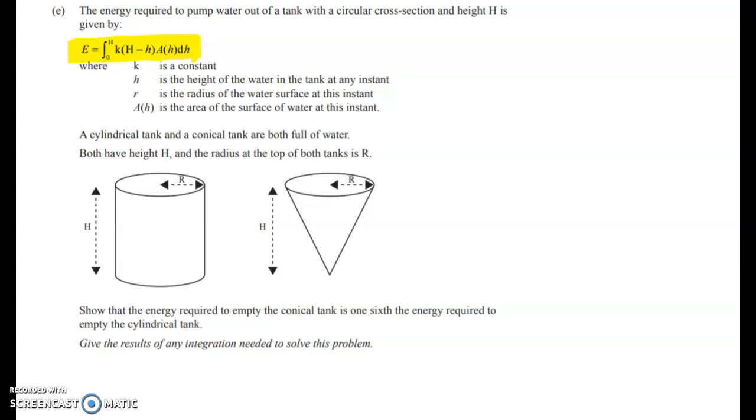So the following things are constants in this question. We've got k we're told is a constant. We've got big H. Now big H is the height of the tank when it's full and in this question we're going to have to compare two tanks. So big H is a constant.